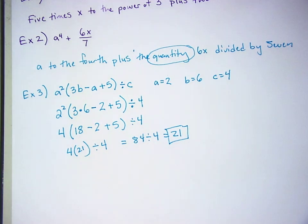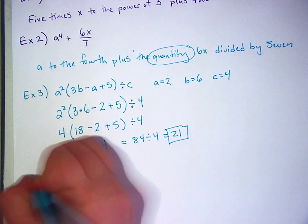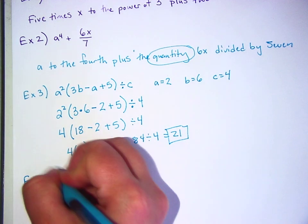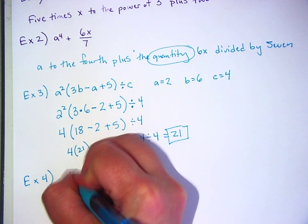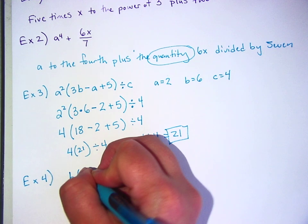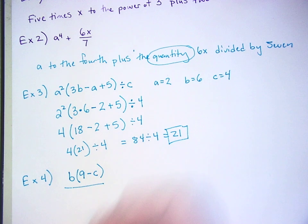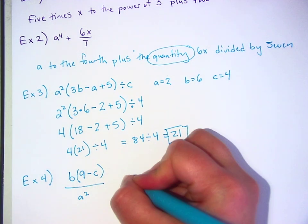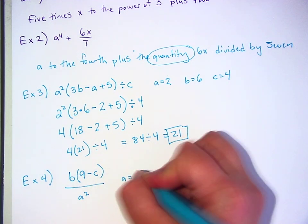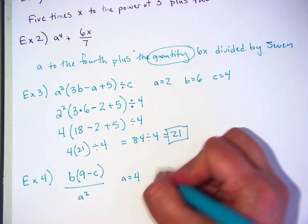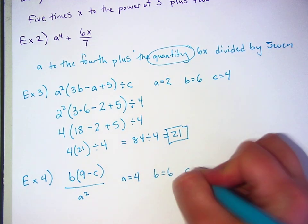How are we feeling about this, fine? Ready to get a prize with your partner? Okay, B times, in parentheses, 9 minus C, close parentheses, over A squared. Reminder that A, this time I'm going to make A 4, and B 6, and C 8. All right.